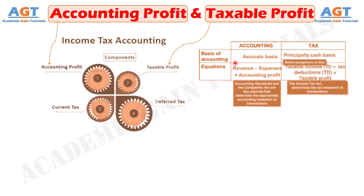The concept of accounting profit differs from taxable profit, in the sense that the latter is the amount which is taxable as per the provisions of the Income Tax Act. It is calculated by taking into account accounting profit and then adding the non-allowable expenses, less allowable expenses, and the incomes credited in the profit and loss account.